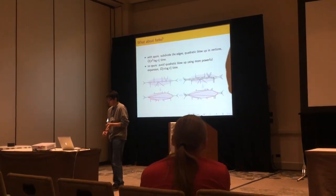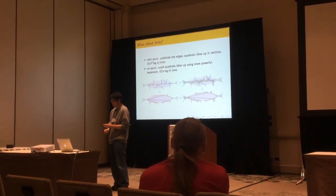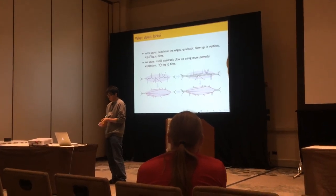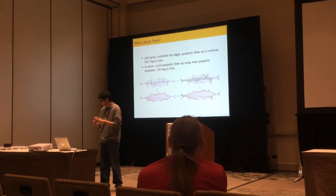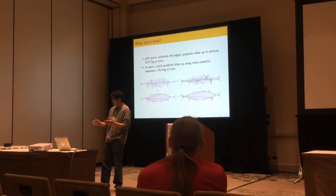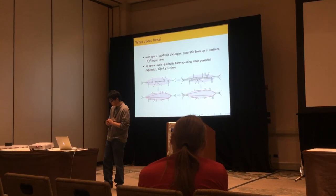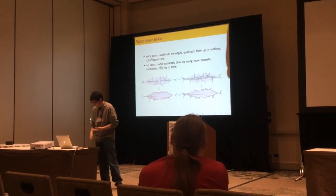But if there's no spurs and there's only forks, then we can avoid the quadratic blow-up. This is a more powerful expansion, which we call the bar expansion. We expand the entire maximal monotone path each time. So we can do it in O(n log n).